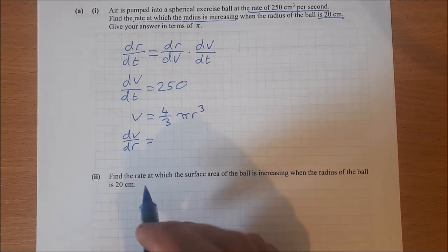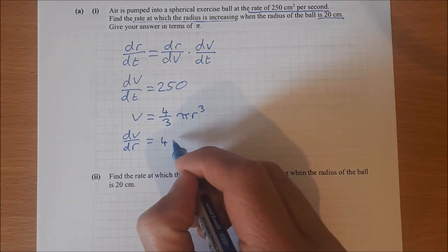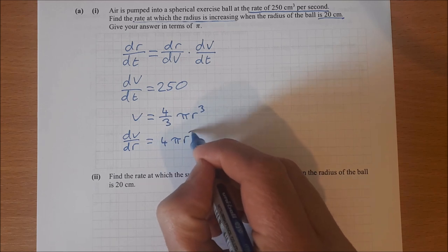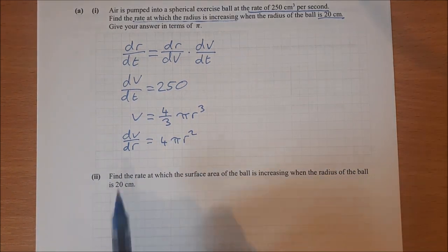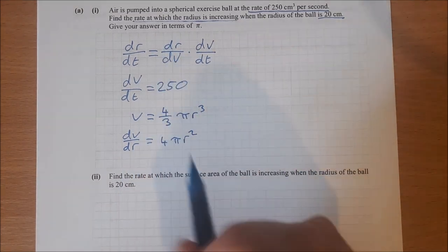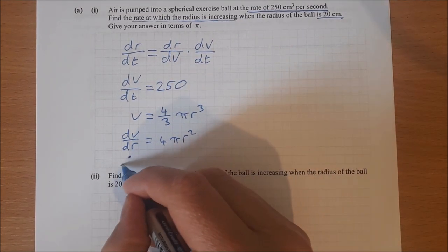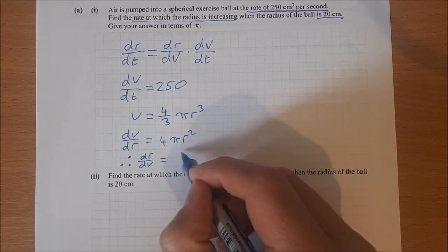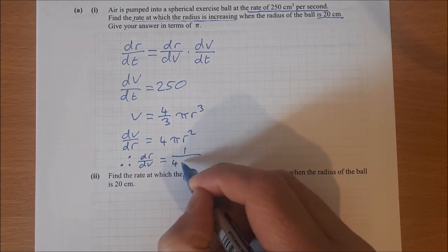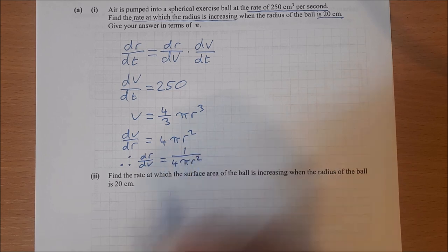I can differentiate that formula. I can do dv/dr. Three by 4/3 is 4 pi r squared. So dv/dr is 4 pi r squared. But I don't want dv/dr, I want dr/dv, so I can just flip it upside down.